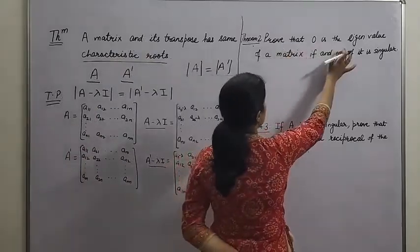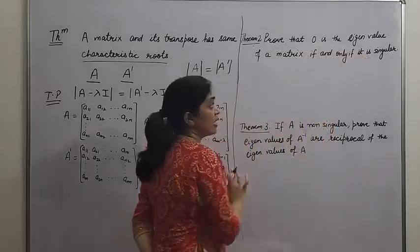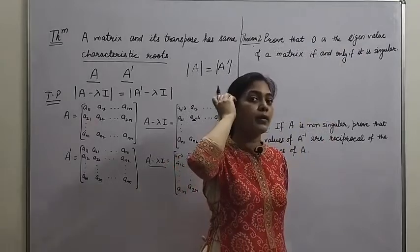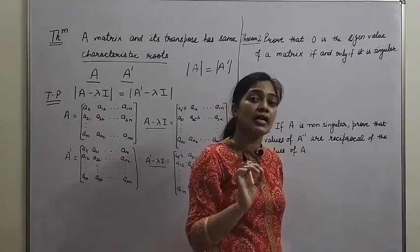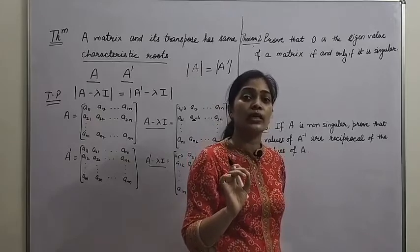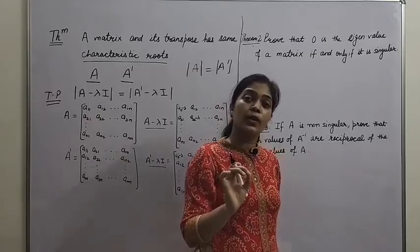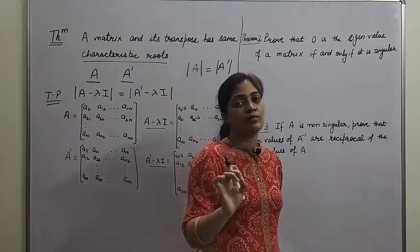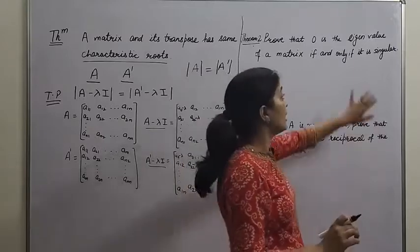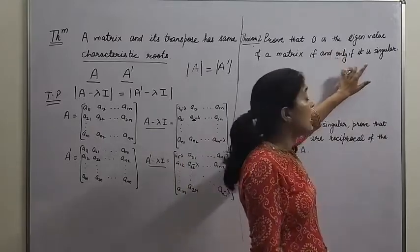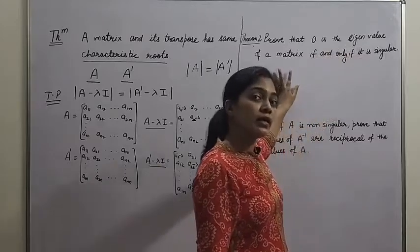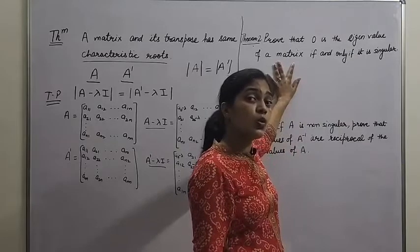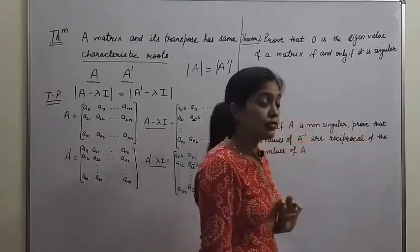The next result is: prove that 0 is the eigenvalue of a matrix if and only if that matrix is singular. What we have to prove is that 0 will be the eigenvalue (characteristic root or characteristic value) of any matrix only if that matrix is singular. Singular means the determinant of that matrix must be equal to 0. Since the condition is 'if and only if': if the matrix is singular then 0 is its eigenvalue, and if 0 is an eigenvalue then the matrix is singular.